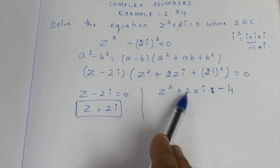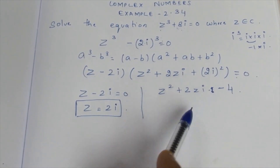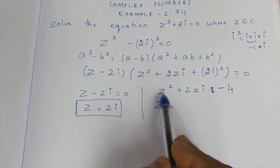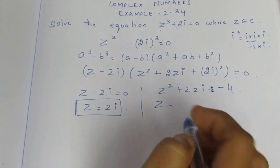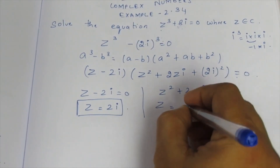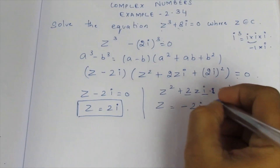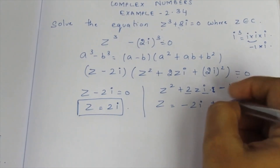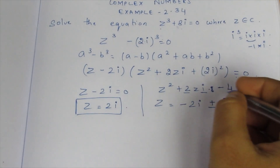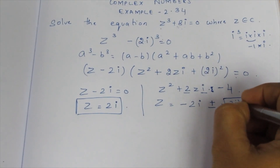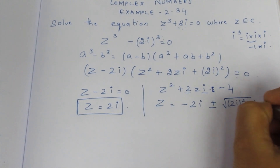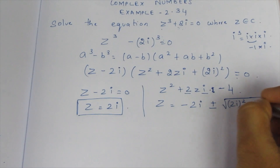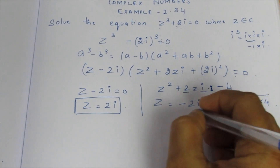This is the quadratic formula. Z is equal to the quadratic equation result: Z = (-b ± √(b² - 4ac)) / 2a. Here -b is -2i, so Z = (-2i ± √((2i)² - 4(1)(-4))) / 2.